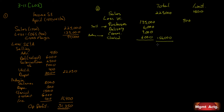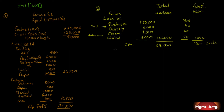On a per unit basis: delivery is $40 per unit; commissions are 4% of $1,500 which is $60 per unit; clerical variable is $40 per unit. That gives variable cost per unit of $1,040, and a contribution margin per unit of $460. Total contribution margin is $69,000.